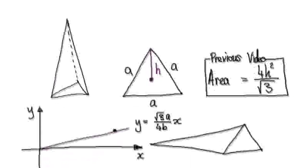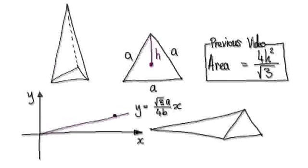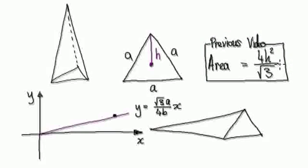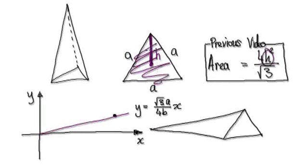Following on from the previous video, for a given h, we can work out the area. In the previous video, we established that for a given h — for a given height — we can work out the area of this equilateral triangle.